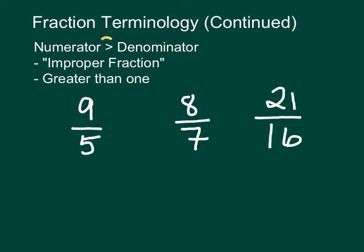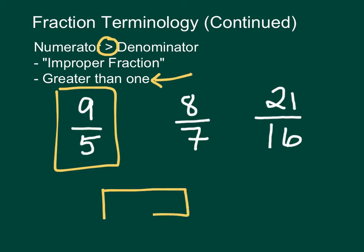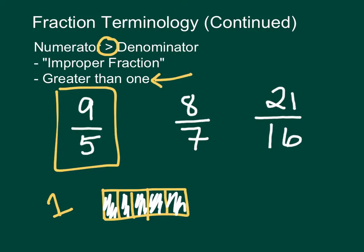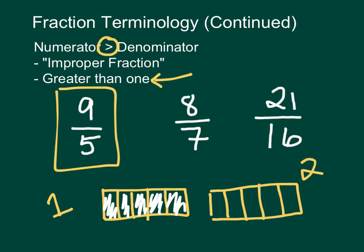If our numerator is actually larger than our denominator — the symbol means larger than — this is what is called an improper fraction. An improper fraction is always larger than one. For example, if I take a whole or one and divide it into five pieces and start filling them in, I realize I've run out of room. So I actually need to draw another whole. Going on to the sixth, seventh, eighth, and ninth pieces, we can see nine-fifths is actually just a little less than two.